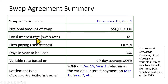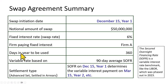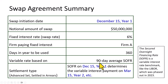The fixed interest rate — the swap rate — is 6%, and we're looking at this from the viewpoint of Firm A, which pays the fixed interest rate. The days-in-year convention used is 360, to make the math easier. The variable rate is based on 90-day average SOFR since payments are made quarterly.